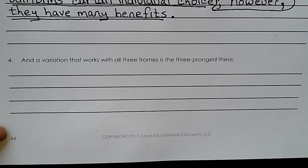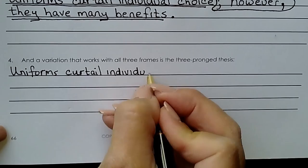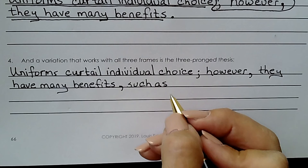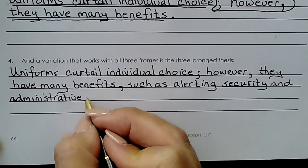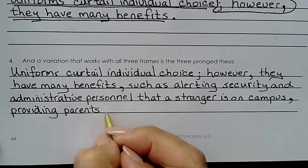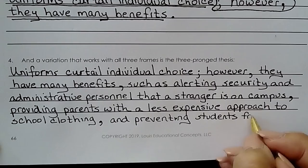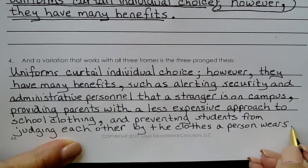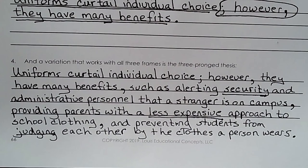Now comes our framed thesis. We start with any one of the above constructions — I'm going to use number three: Uniforms curtail individual choice; however, they have many benefits, such as — now watch me name the topics of each of my paragraphs — alerting security and administrative personnel that a stranger is on campus, providing parents with a less expensive approach to school clothing, and preventing students from judging each other by the clothes a person wears. Our reader now knows the topics of each of our paragraphs: security, cost, and judging others.